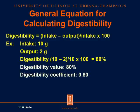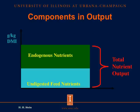As an example, if we feed 10 grams of a nutrient and we collect 2 grams of that nutrient in the fecal output, then the digestibility would be 10 minus 2 divided by 10, multiplied by 100, giving you 80%. We call this the digestibility value of 80%, or if we don't multiply by 100, we call it a digestibility coefficient of 0.80. We use this equation to calculate digestibility of nutrients and energy in all ingredients.